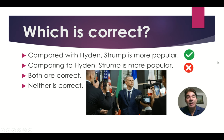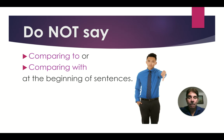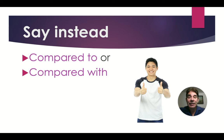The best answer is A: 'Compared with Haydn, Strump is more popular.' B is incorrect. Do not say 'comparing to' or 'comparing with' at the beginning of sentences. Say instead 'compared to' or 'compared with.'